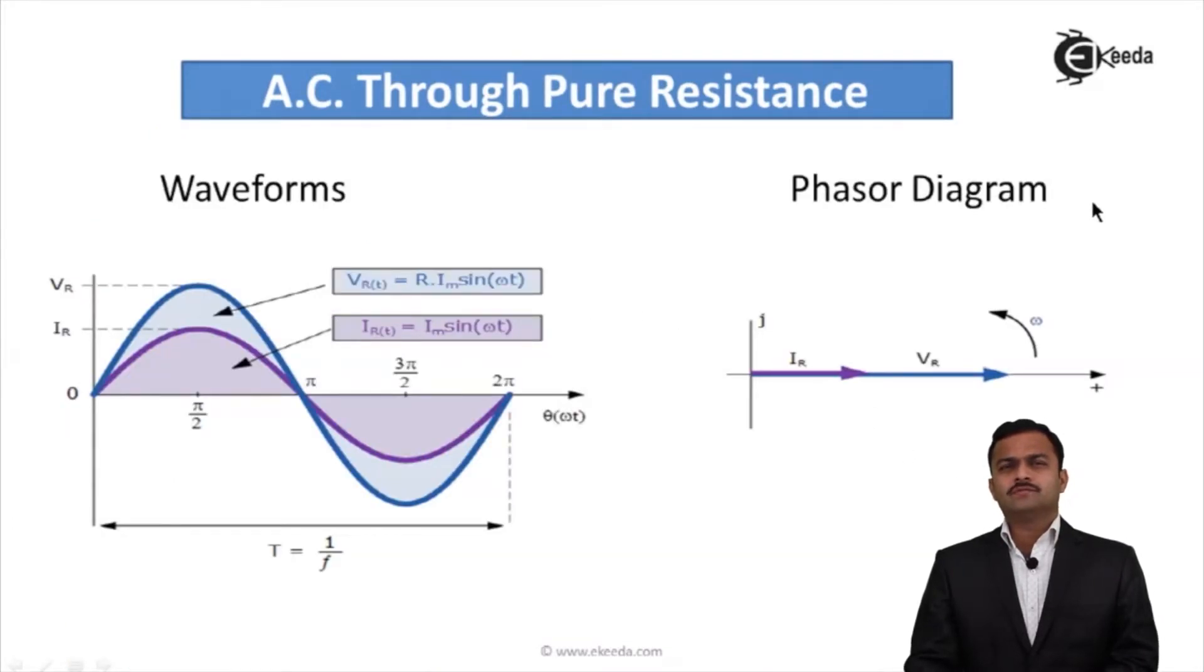Now let's see the waveforms. This is Vm sin(ωt) starting from zero. The phase angle φ for current is also zero, so current will also start from zero and is given by Im sin(ωt). If I see properly, both waveforms start at the same instant, zero, and one cycle of both waveforms completes at 2π.